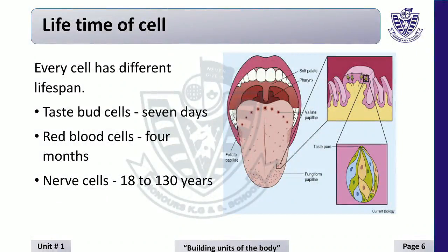Lifetime of cells. Every cell has a different life span. After that, cells die and are regenerated. For example, taste bud cells — those are on our tongues so we can taste flavors — last only seven days. Red blood cells have a life span of four months. Nerve cells can live more than 18 to 130 years, and they are located in our brain. If our nerve cells die, memory loss will start.